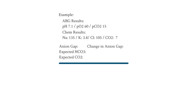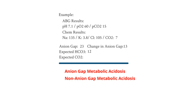Now let's go over this together. The anion gap is calculated by taking 105 plus 7, which equals 112, and then taking 135 minus 112. So the anion gap is 23. The change in anion gap is the anion gap minus 10, so here 23 minus 10 is 13. Given that the change in anion gap is 13, we know that there is an anion gap metabolic acidosis present. Now let's look at the expected bicarb: 25 minus 13 equals 12. Our actual bicarb from the chemistry is 7, which is less than our expected bicarb of 12, so we also have a non-anion gap metabolic acidosis.